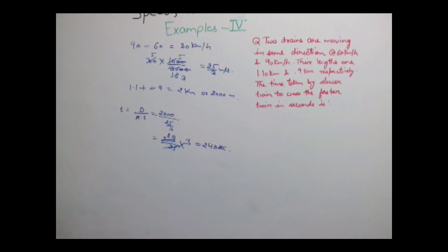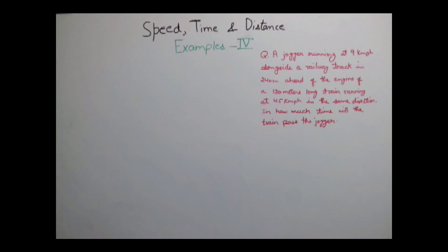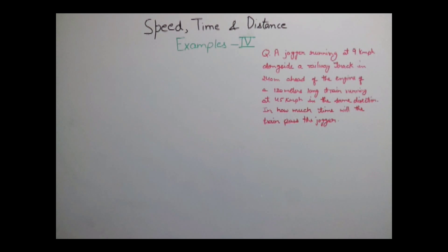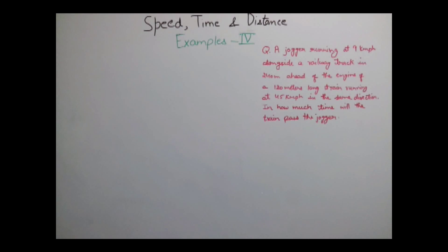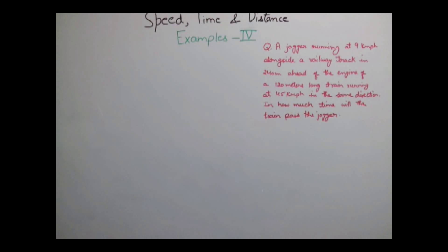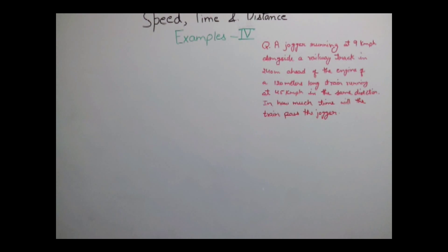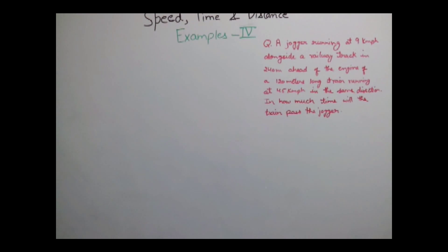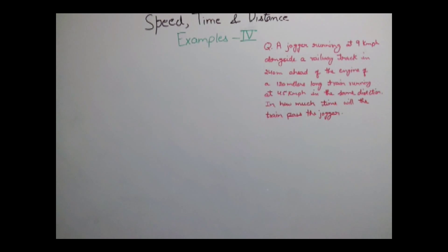Let's have another example. A jogger running at 9 km per hour alongside a railway track is 240 meters ahead of the engine of 120 meters long train running at 45 km per hour in the same direction. In how much time will the train pass the jogger?